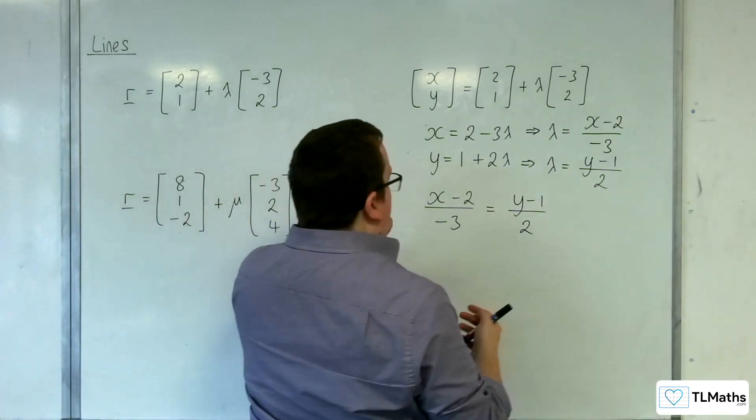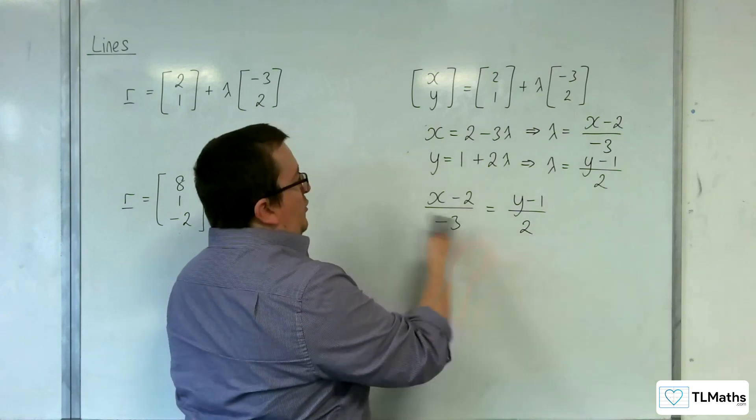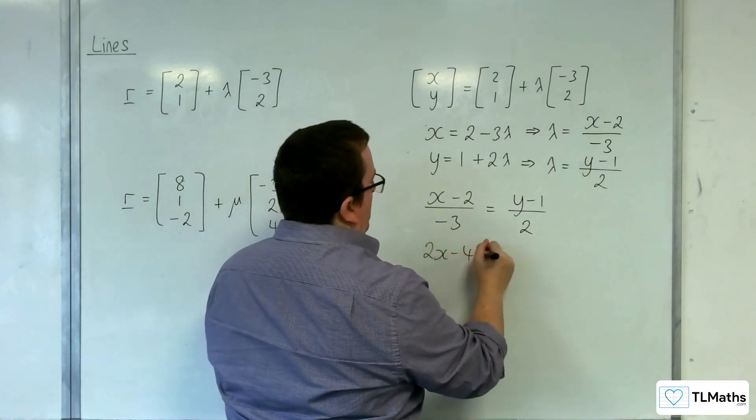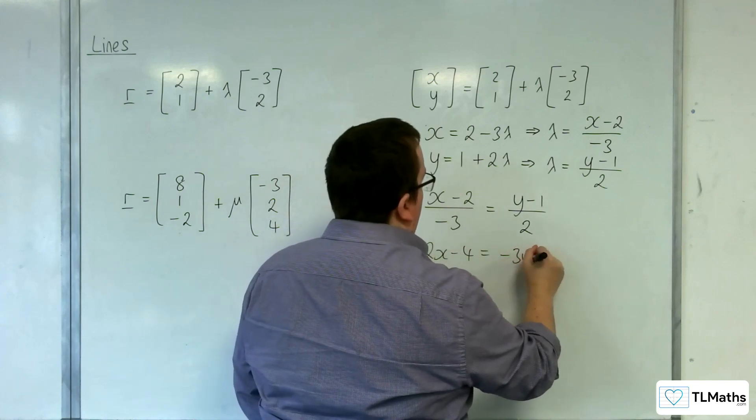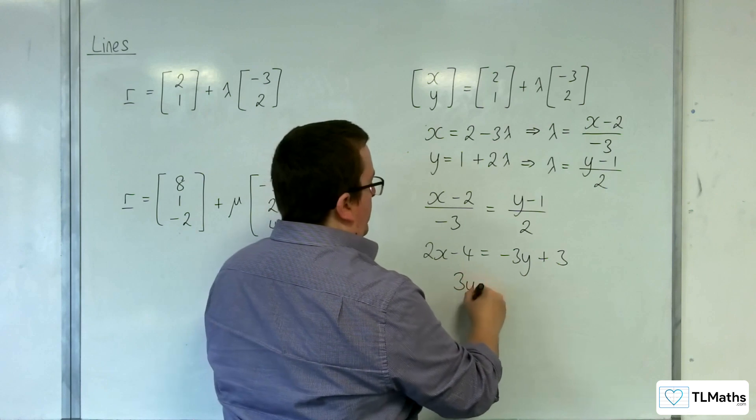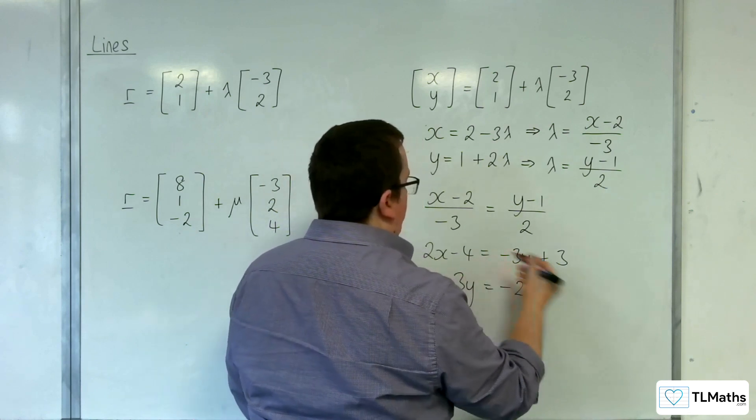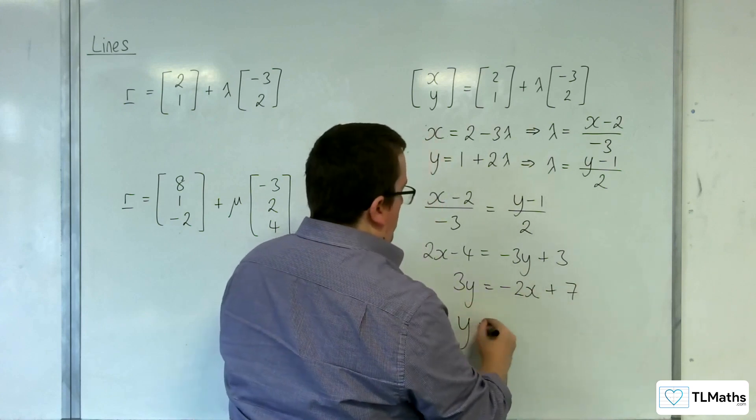Now, we can rearrange this to get it into the form that we all know and love, y equals mx plus c if we want to. So, multiply both sides by 2, multiply both sides by minus 3, then get the 3y onto this side, subtract 2x from both sides, add 4 to both sides, and divide through by 3.